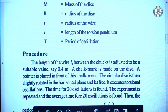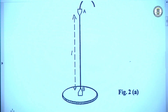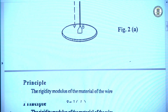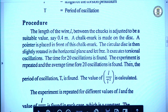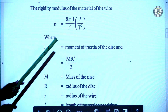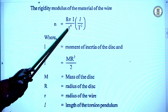In the procedure, we initially adjust the length of the torsion pendulum wire by moving chuck A. We take lengths like 40 cm, 45 cm, 50 cm, etc. The circular disc is twisted slightly and released, performing torsional oscillations. We count the time for 10 or 20 oscillations to find the period T, then determine L/T². In the formula n = 8πI / r⁴ · (L/T²), the quantity 8πI / r⁴ is a constant.